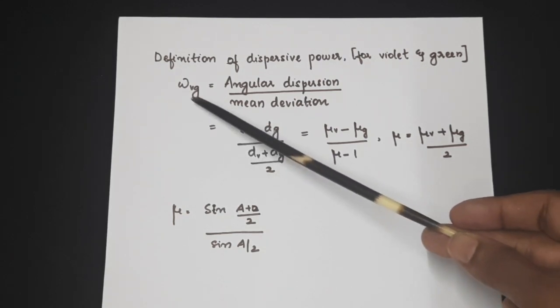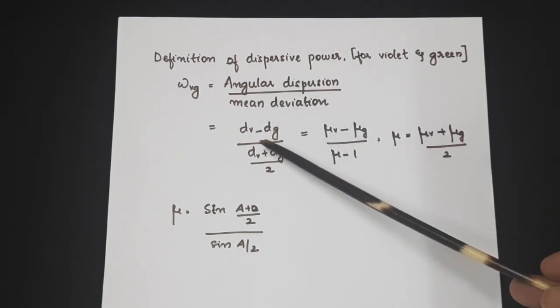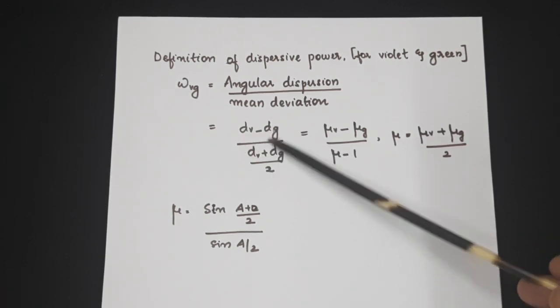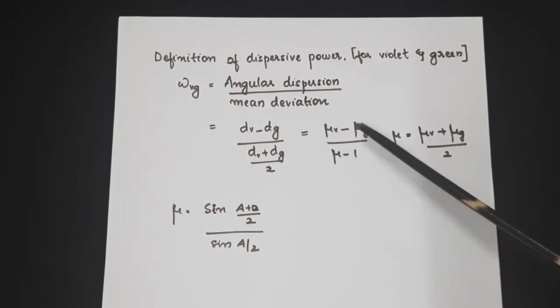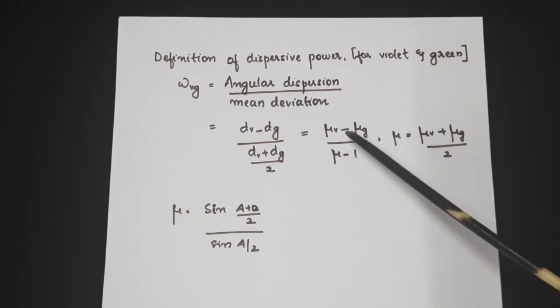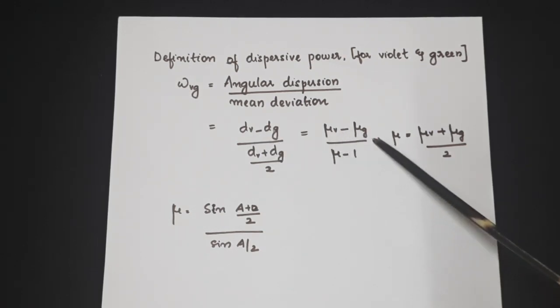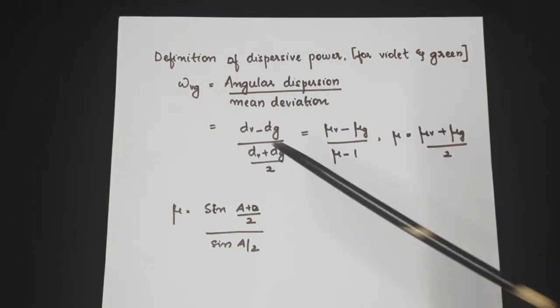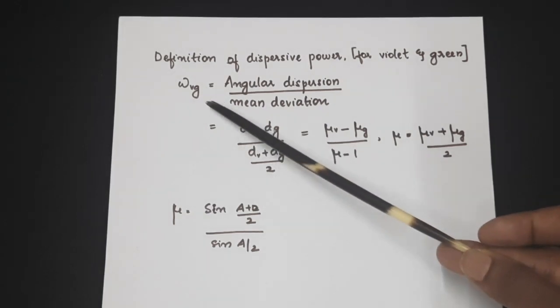This is the dispersive power calculation. Dispersive power for the violet-green combination is defined as angular dispersion by mean deviation. That is, dV minus DG which is the difference in angular dispersion by mean deviation would be dV plus DG by 2. Now, making use of the relation that deviation d is equal to mu minus 1 into A, you can interpret this equation as mu V minus mu G by mu minus 1 where mu we have taken as the mean refractive index of violet-green color. So on substituting this, we can calculate the dispersive power for violet-green region.